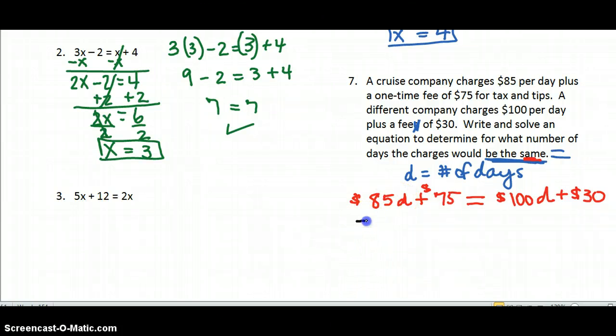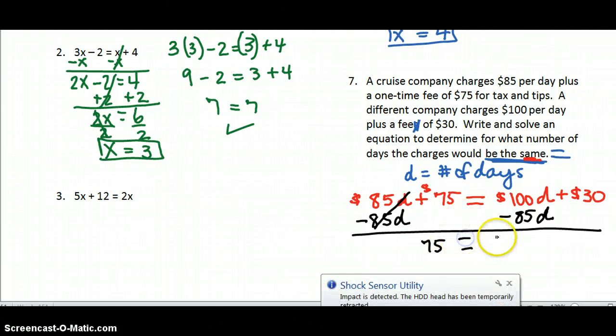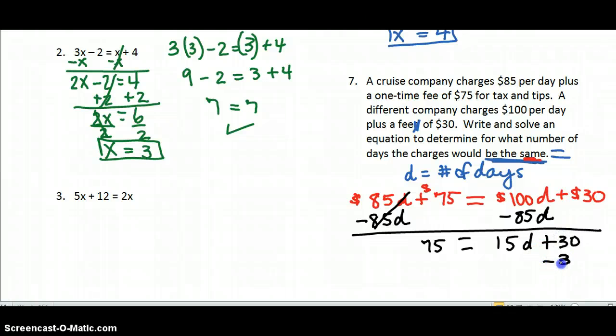So I am going to do something different this time. I'm going to subtract 85. And I know you're probably thinking, wait a minute, you've been subtracting the variable, bringing them all to the left. Think about it. Why did I subtract 85 and bring all the variables to the right? At the bottom of this page, I want you to write your answer. Now my 85D cancels out. 75 equals 15D plus 30. And now I'm going to subtract 30 from both sides. So again, my variable is staying on the right.